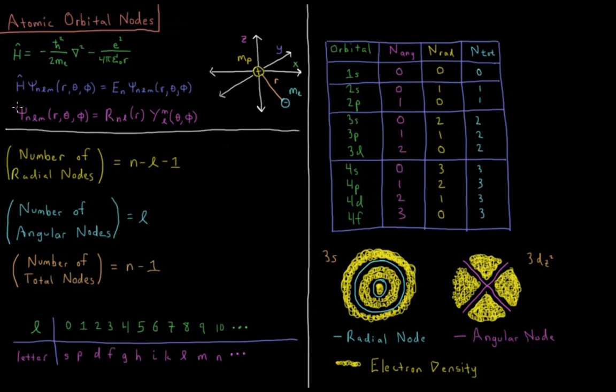Our wave function psi N, L, M of R, theta, and phi can be broken down into a radial and an angular component. The radial component being R N, L of R, depending on the quantum numbers N and L, and the angular part depending on the quantum numbers L and M, and the angular variables theta and phi.